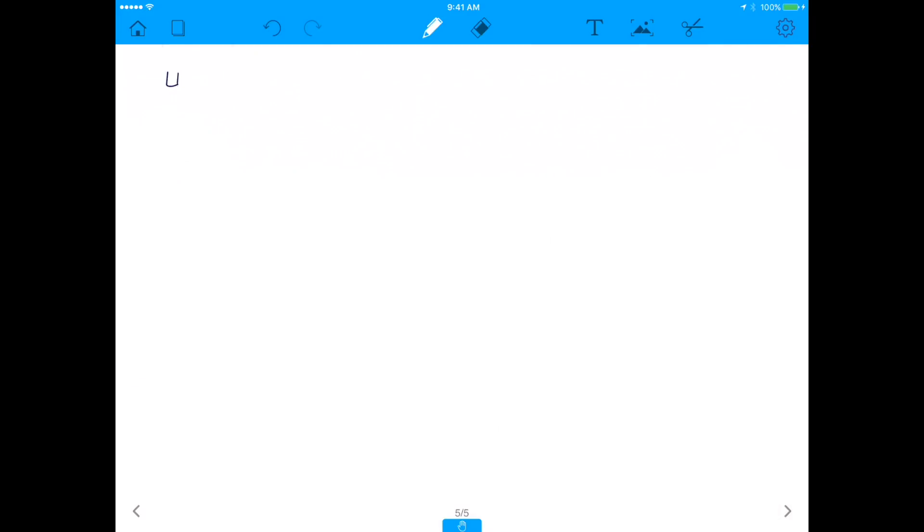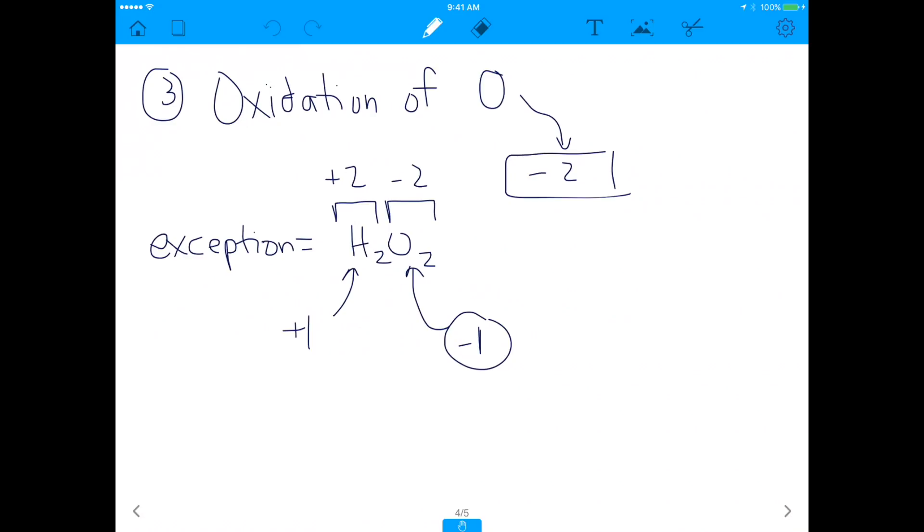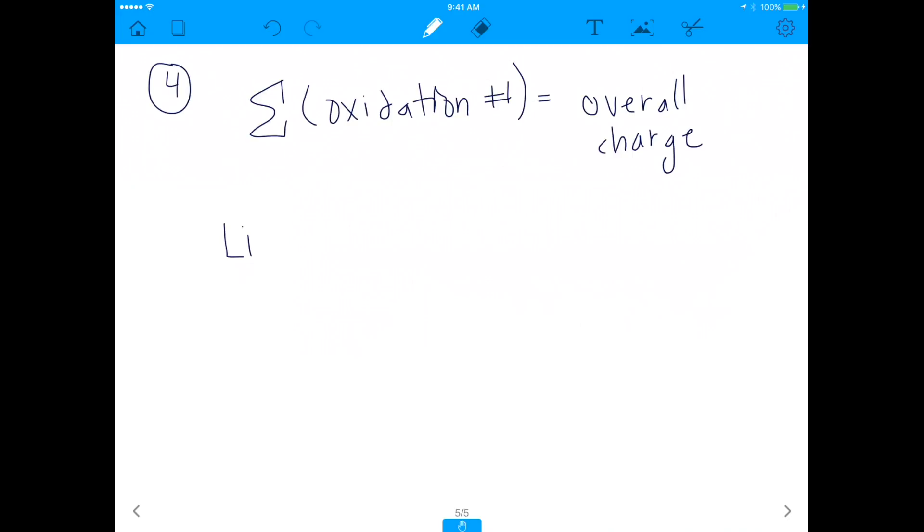Last but not least, the last thing you should remember for oxidation numbers is that the sum of the oxidation numbers is equal to the overall charge. And we've already been doing this, right? In all of the examples I've given you, in H2O2, we added up the oxidation number of the hydrogen, and we added up the oxidation number of the oxygen, and you end up getting zero, and you get zero because H2O2 is an uncharged molecule. Think about something as simple as lithium chloride. Lithium is plus one, chloride is minus one, and when you add those two together, you get an overall charge of zero because lithium chloride does not have an overall charge.